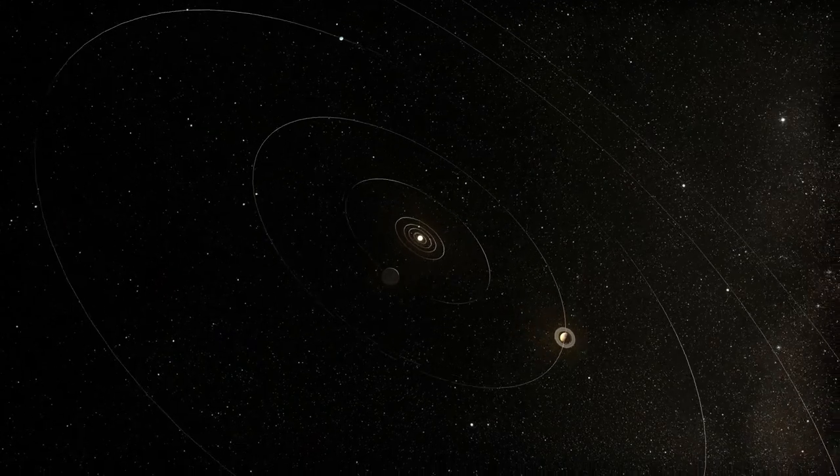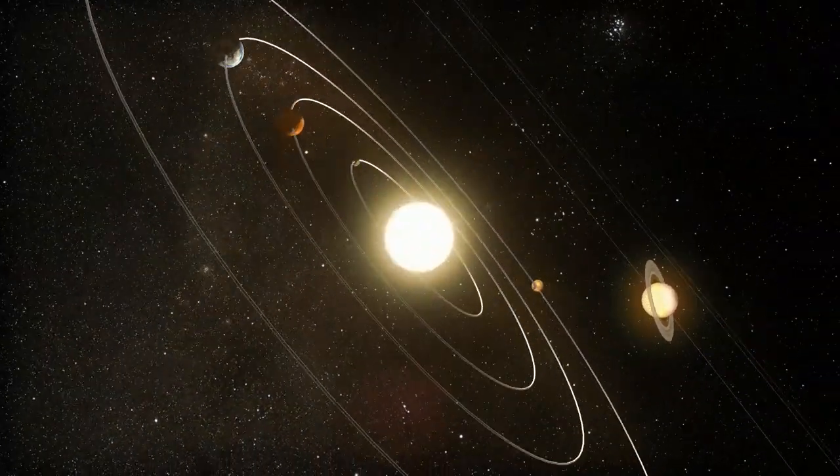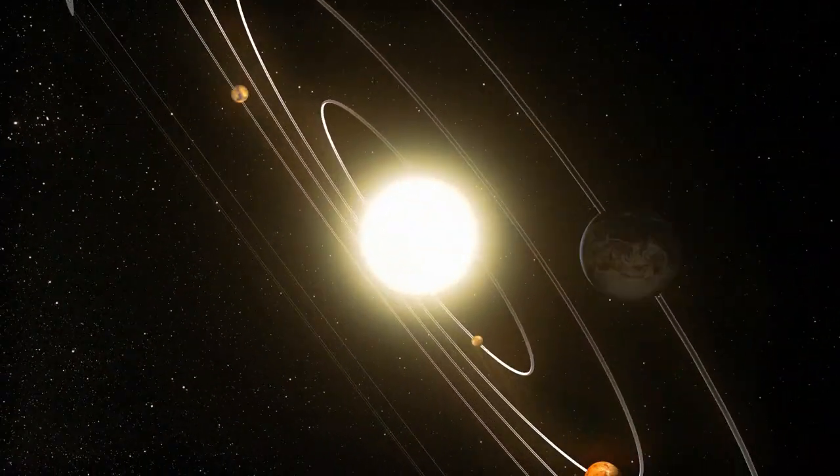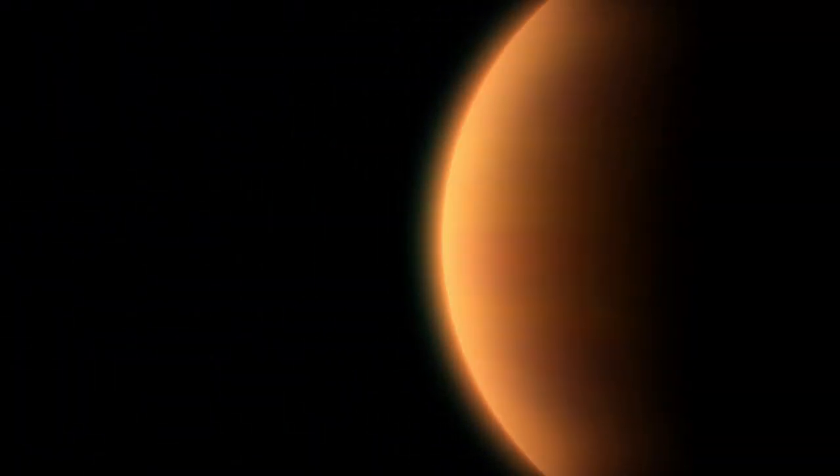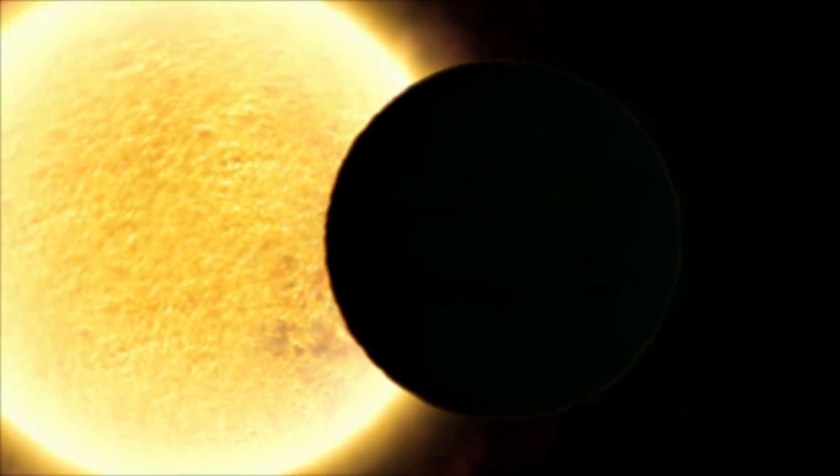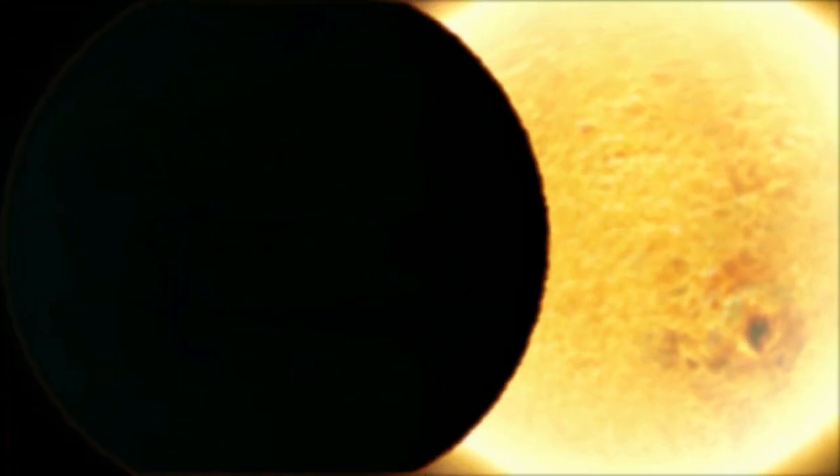Transits are also biased towards finding larger exoplanets that are closer to their host star. These planets block out more light, producing a larger dip in brightness that is easier to detect. So transits don't represent the full diversity of worlds out there.